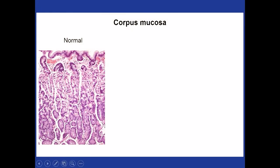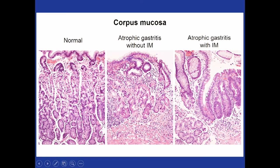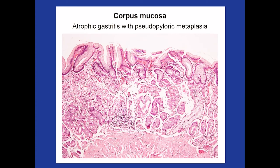In the corpus, the glands are different — they're tubular, mainly composed of chief and parietal cells. This is a moderate to severe case of atrophy without metaplasia; the glands are shorter with a lot of loss of parietal and chief cells. In this example, there is intestinal metaplasia in this area, recognized by the goblet cells. But you can also see a little focus of atrophic fundic glands. Another type of metaplasia in the corpus is pseudopyloric metaplasia.